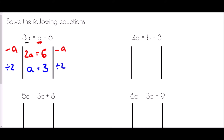In 4b equals b plus 3, again we first identify the smallest amount of b — in this case it's the single b. So I'm going to subtract b from both sides: 4b take away b is 3b, and b take away b leaves just the 3. To get b all on its own I divide by 3 on both sides, so b equals 1.